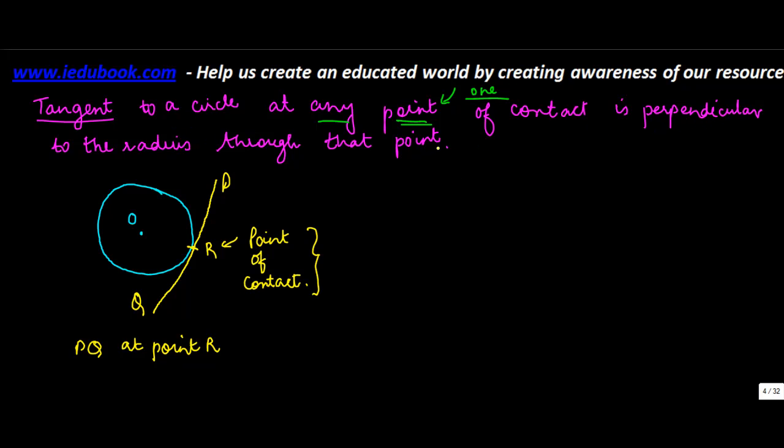Now if you draw a line OR, OR is what? OR is the radius because R lies on the circumference of the circle. So OR is a radius. So this theorem says that OR is perpendicular to PQ.